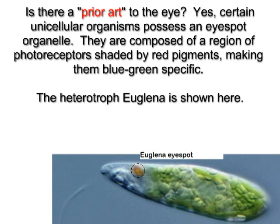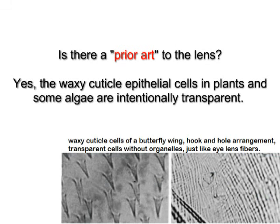Is there a prior art to the eye? Yes — certain unicellular organisms possess an eye spot organelle, composed of a region of photoreceptors shaded by red pigments, making them blue-green specific. The heterotroph Euglena is shown here. Is there a prior art to the lens? Yes — the waxy cuticle epithelial cells in plants and some algae are intentionally transparent.